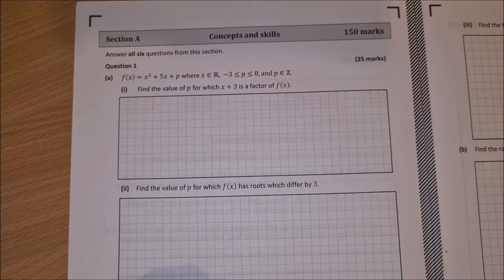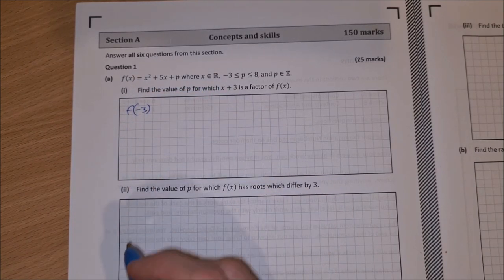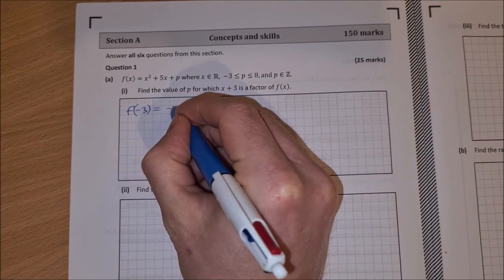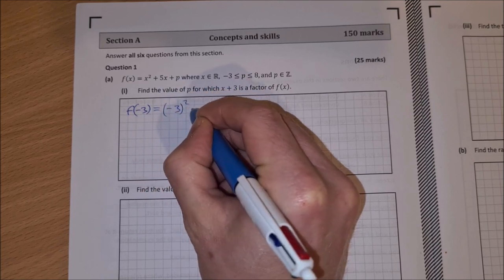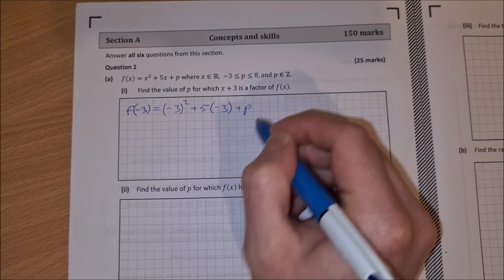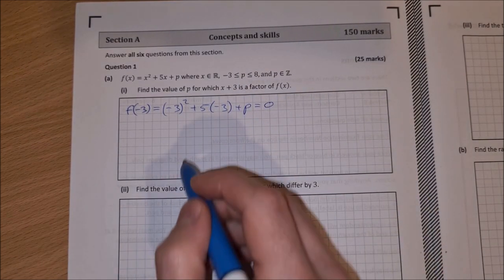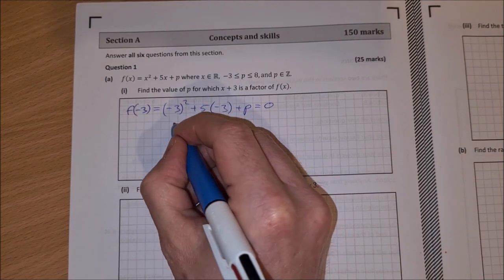we use the Factor Theorem and then sub in f of minus 3. So we do f of minus 3, that's equal to minus 3 squared plus 5 times minus 3 plus p, and that would be equal to 0. So that's minus 3 squared is 9,